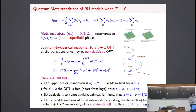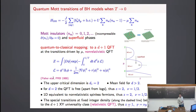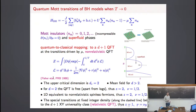At some values of the parameters, you pass from a superfluid phase — in which the atoms can move around in the lattice — to a situation in which the ground state has one particle per site, two particles per site, and so on. These are called the Mott phases. They are incompressible: the derivative of the density with respect to the chemical potential is zero. One can study the transition and construct the effective quantum field theory describing it.